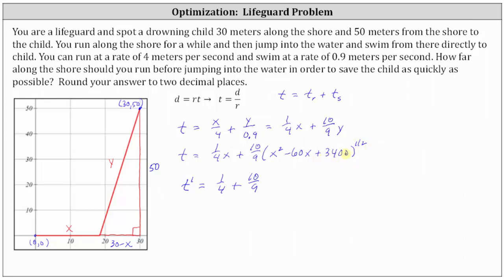So we have 1/2 times the quantity (x² - 60x + 3400) raised to the power of 1/2 minus 1, which is -1/2, and then times the derivative of (x² - 60x + 3400), which is 2x - 60.